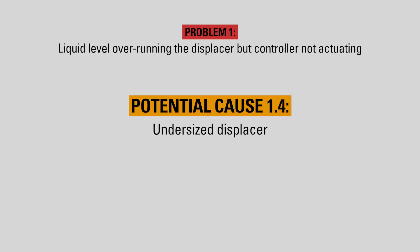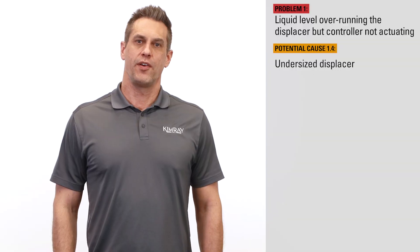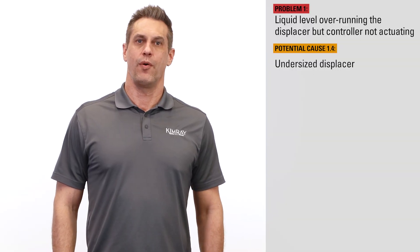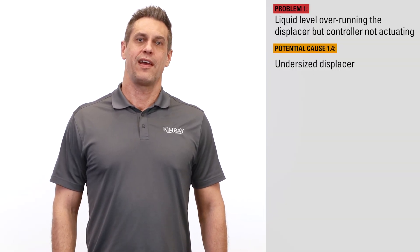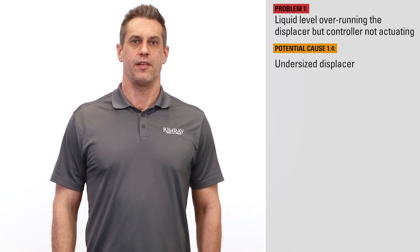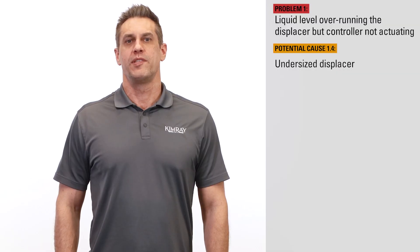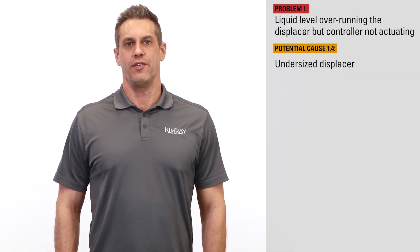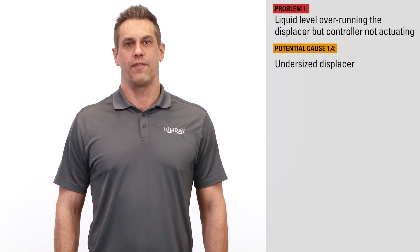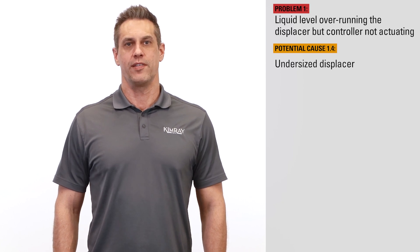If by adjusting the spring tension and span settings you're still not able to alleviate the problem at both ends, this could be an indication that the displacer is undersized. When interfacing, if the specific gravity differential is below 0.2, buoyant force from the displacer may not be sufficient to actuate the controller. A larger Kimray displacer may be necessary. Over time, specific gravities in your system can change, which can account for a controller that was working fine but then started having these issues.